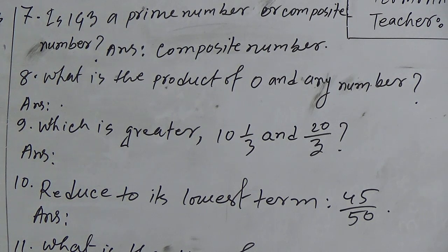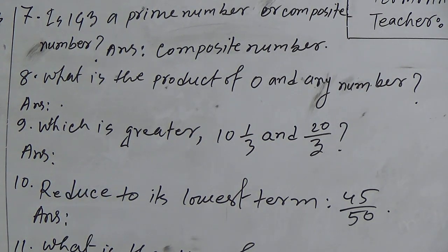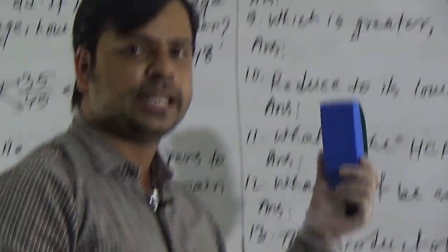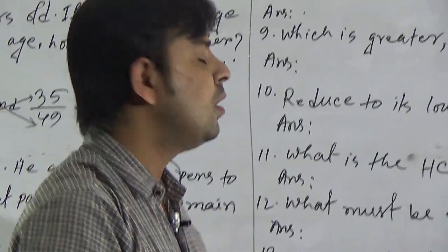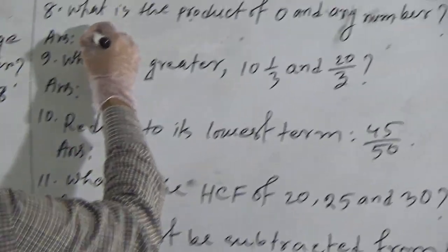Question 8: What is the product of 0 and any number? Dear students, you know the product of 0 and any number always will be 0.